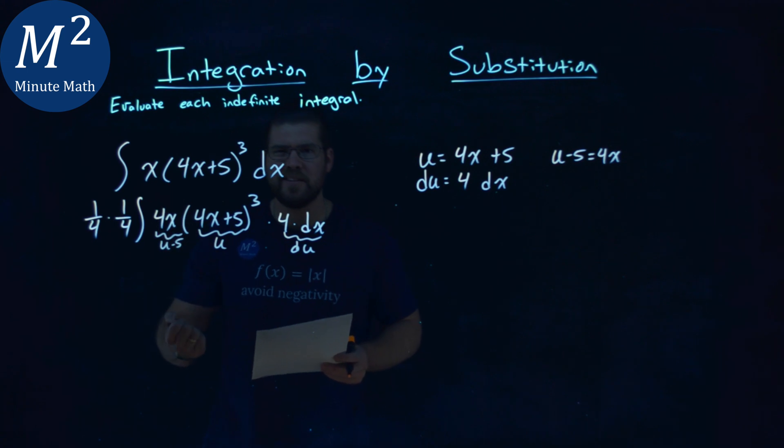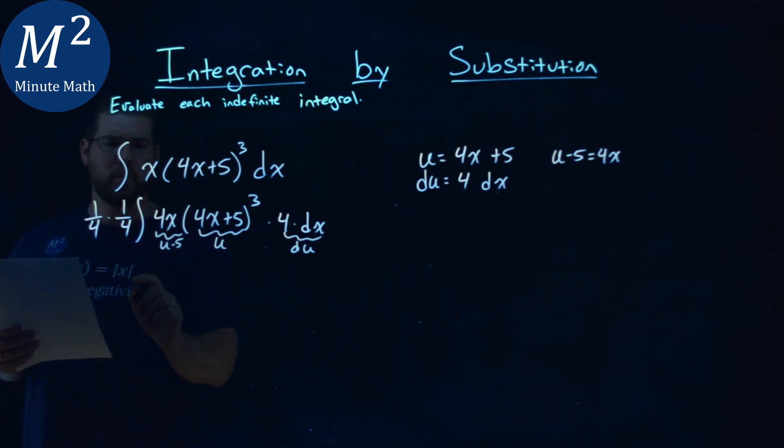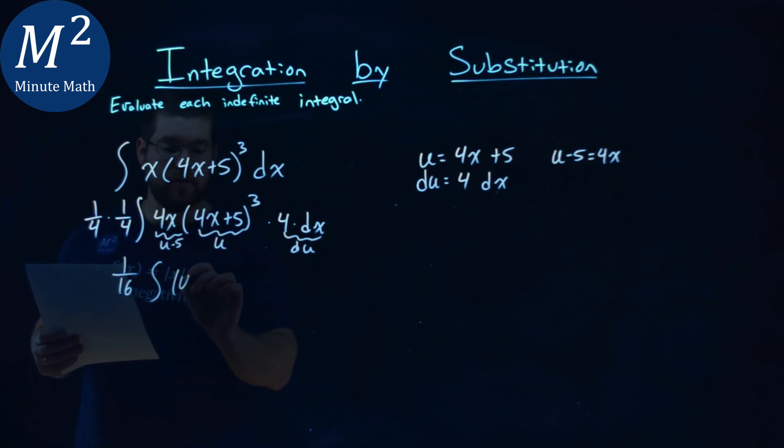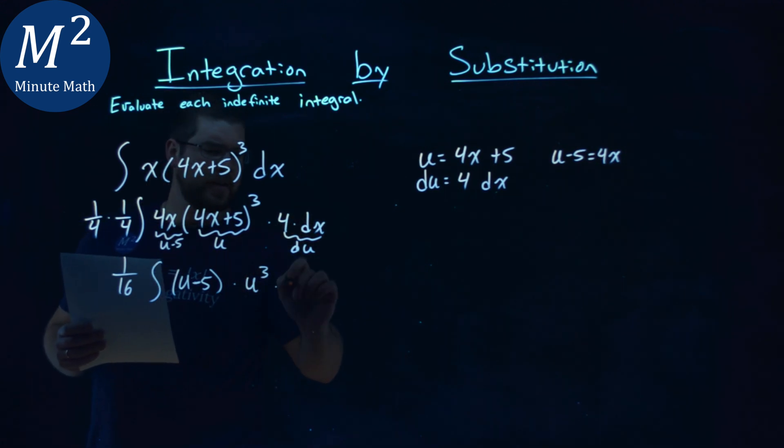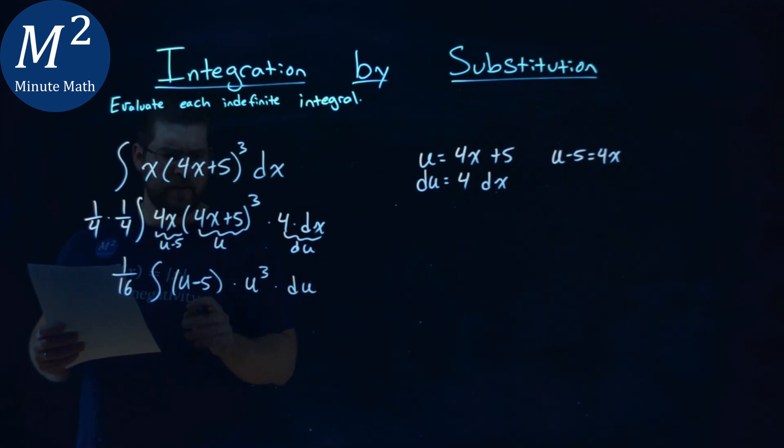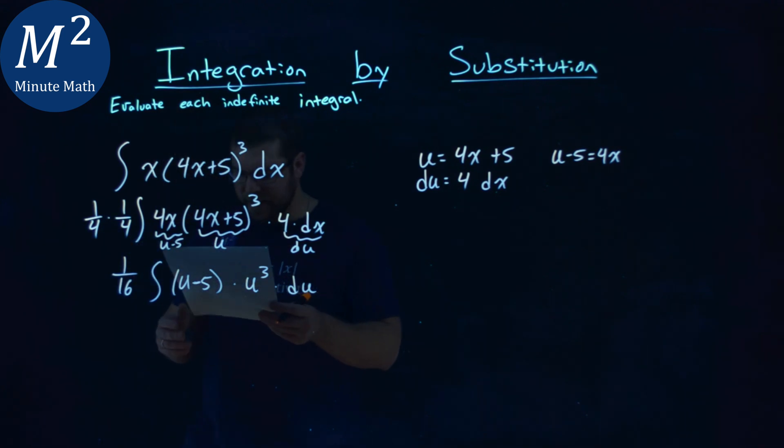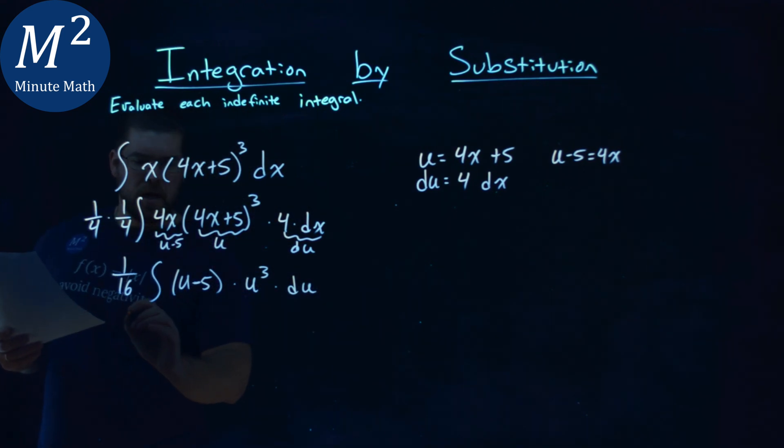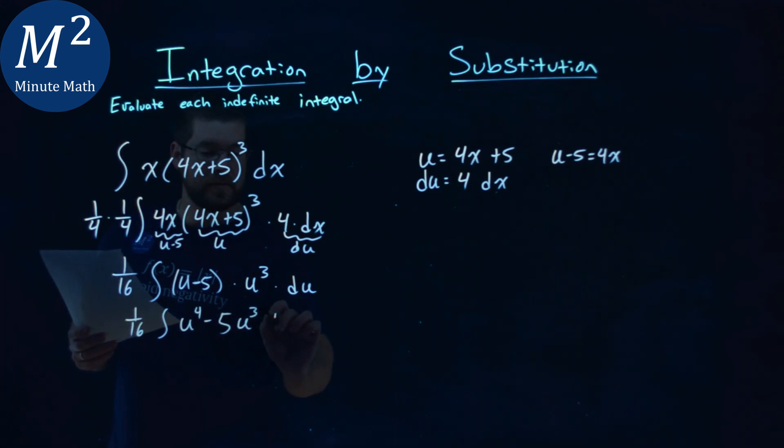So let's go rewrite this in terms of u. 1 fourth times 1 fourth is a 1 16th. Right here, instead of 4x, I have a u minus 5 being multiplied by, well, just u to the third power now, times this is just a du. Now, before we dive in here, let's go simplify this a little bit. It makes it a lot easier. So we have a 1 16th here, integral multiplied by this u to the third out. u times u to the third is u to the fourth minus 5, well, u to the third du.